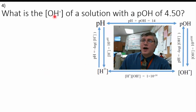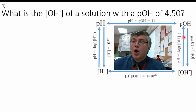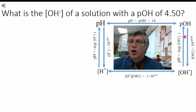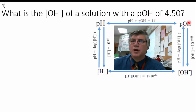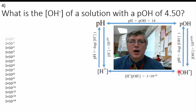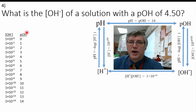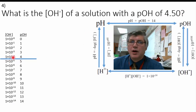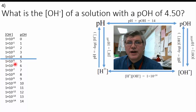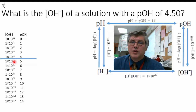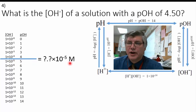Question four: what is the hydroxide ion concentration of a solution with a pOH of 4.5? We're still on the right side of our square, but instead of going from OH up to pOH, we're going to go from pOH down to OH concentration. Here are our hydroxide ion concentrations and our pOH. We want to find 4.5, so somewhere between 4 and 5. Our hydroxide ion concentration is going to be somewhere between 1 times 10 to the negative 5 and 1 times 10 to the negative 4 — something times 10 to the negative 5.